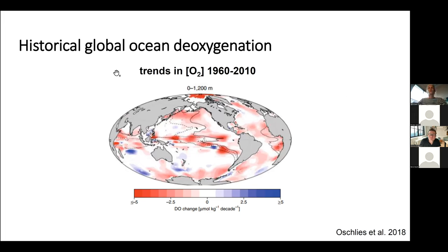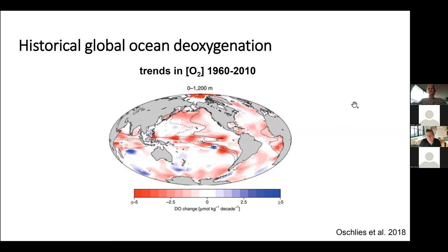Here's a map of historical oxygen trends between 1960 and 2010, based on global oxygen inventories. Gain of oxygen is shown in blue, losses in red, in micro-kilogram per decade. The equatorial, North Pacific, Atlantic, and Southern Oceans are most affected, and the largest losses occur in the tropical thermocline.